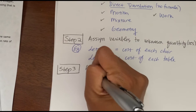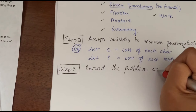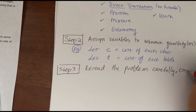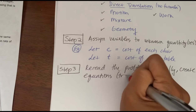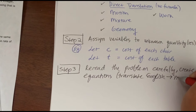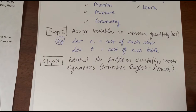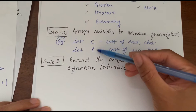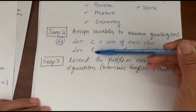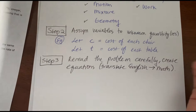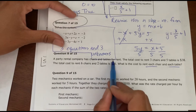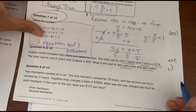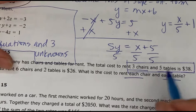Step three: now that we know the problem type and have two variables for the two unknowns, we are going to reread the problem carefully and as we do so, create equations — in other words, translate English to math. Math is like a language and you are the translator. Since there are two unknowns, there are going to be two equations.